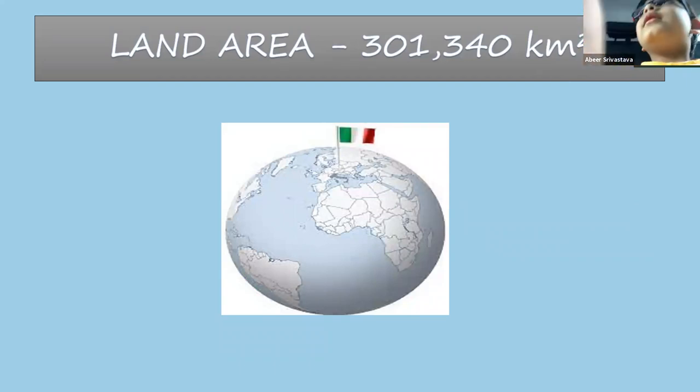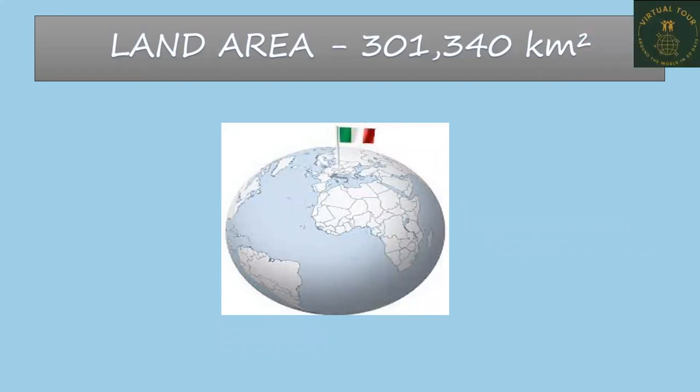Talking about the land area, the land area of Italy is 3,01,340 square kilometers.